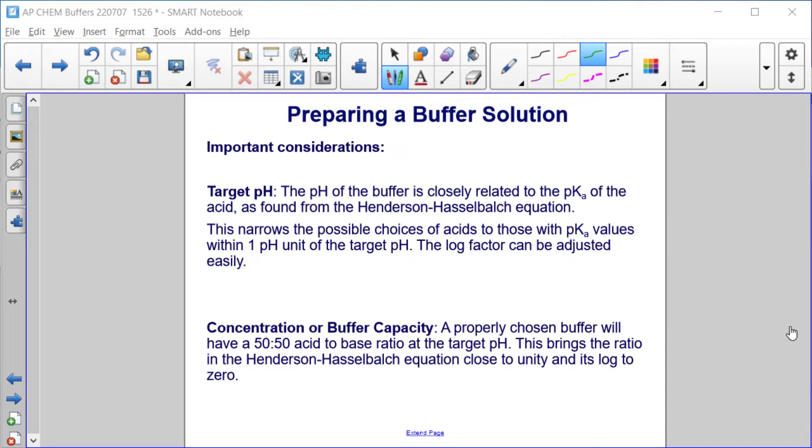Important considerations. Target pH. The pH of the buffer is closely related to the pKa of the acid as found from the Henderson-Hasselbalch equation. This narrows the possible choices of acids to those with pKa values within one pH unit of the target pH. The log factor can be adjusted easily.